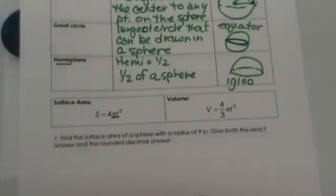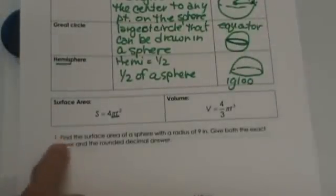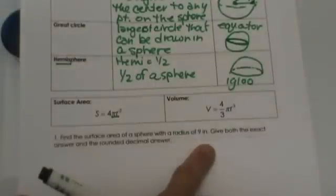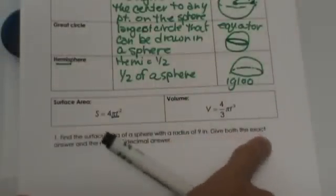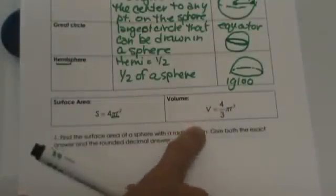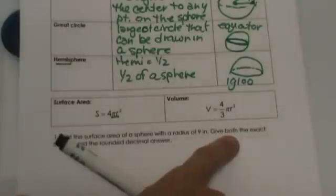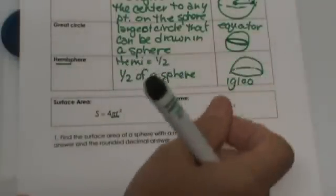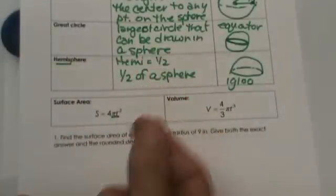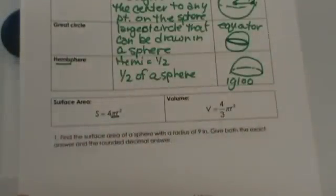So let's look at a couple of examples here. It says find the surface area of a sphere that has a radius of 9. Give both the exact answer and the rounded decimal answer. An exact answer always has a π in it because that is the exact value, not estimated or rounded. Remember, when we actually multiply π out, it is an estimated answer.